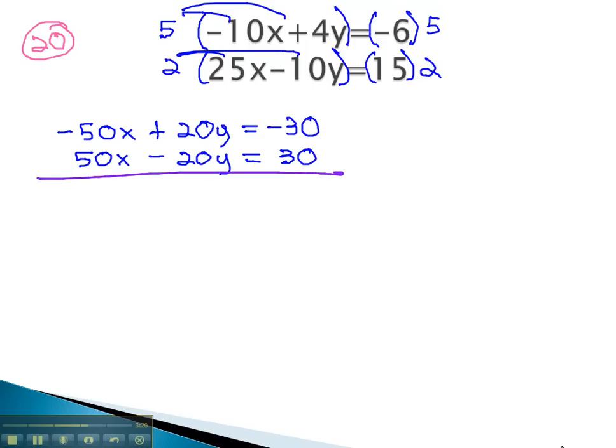Notice this time when we add the equations together, again, the variables subtract out completely, leaving just 0 on the left side of the equal sign. Also notice on the right side, negative 30 plus 30 is 0.